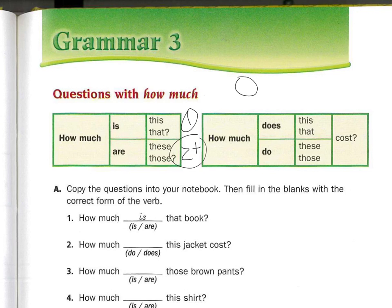How much is this pie? This pie is $2. How much are those pies? Those pies are $6.